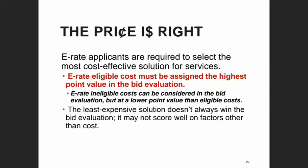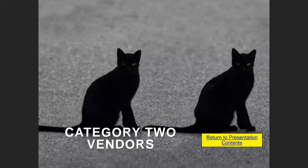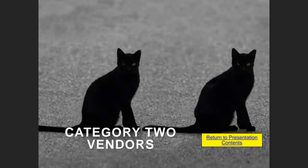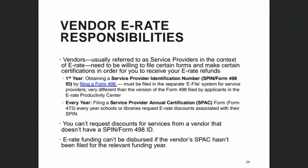This segues nicely to Category 2 vendors. There are some additional things to say about Category 2 vendors. Vendors have certain responsibilities they must take care of in order for your library to receive its E-Rate discounts. The first time a vendor submits a bid and will be listed on an E-Rate application, they must have what's called a Service Provider Identification Number.